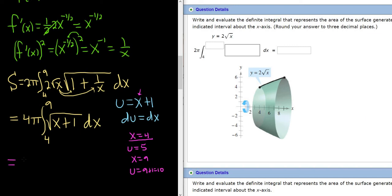So this becomes 4 pi. So instead of 4 on the bottom, we have a 5. And then instead of 9 up top, we have a 10. And then square root of u, let's go ahead and write it as u to the 1 half to save us a step, so we can go ahead and integrate this.